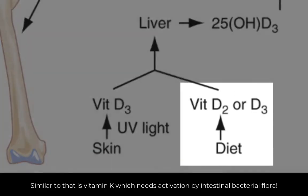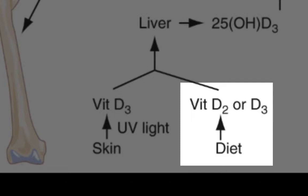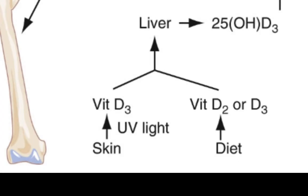The most common form is vitamin D3, which is also called cholecalciferol. This form can be ingested in food or produced in the skin from the effect of sunlight on 7-dehydrocholesterol. Vitamin D is also available from some plants, and the most common plant-derived form is called vitamin D2 or ergocalciferol. As mentioned, these forms are not active inside the body.